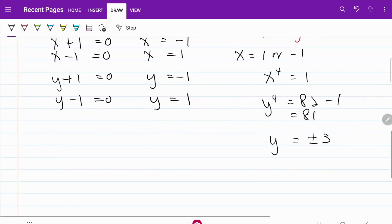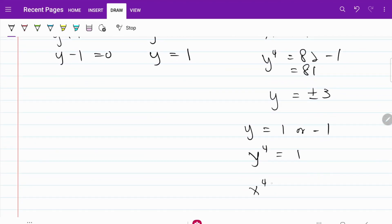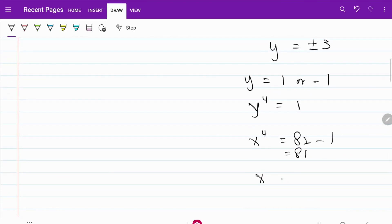Likewise, when y is equal to 1 or negative 1, y to the fourth power will be equal to 1. Therefore, x to the fourth power will be equal to 82 minus 1. That's equal to 81, and x will be equal to plus minus 3. Essentially, that is the reverse of the first combination.